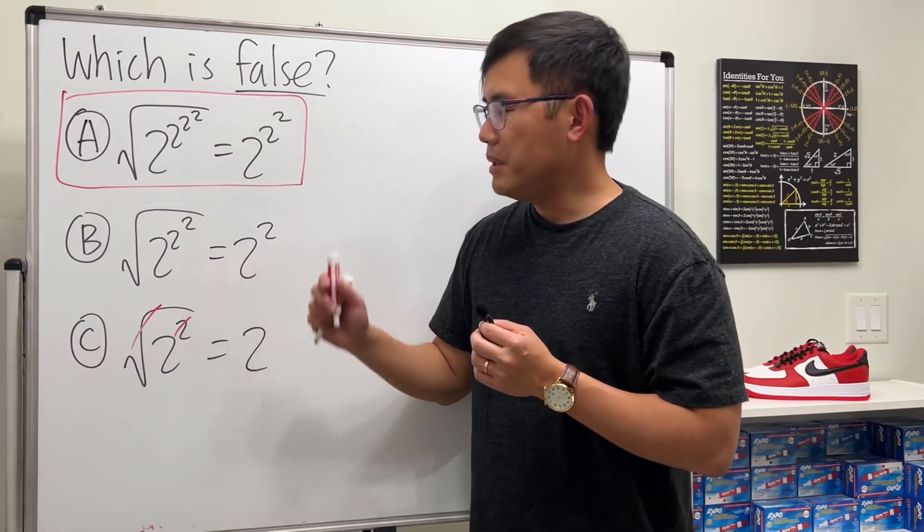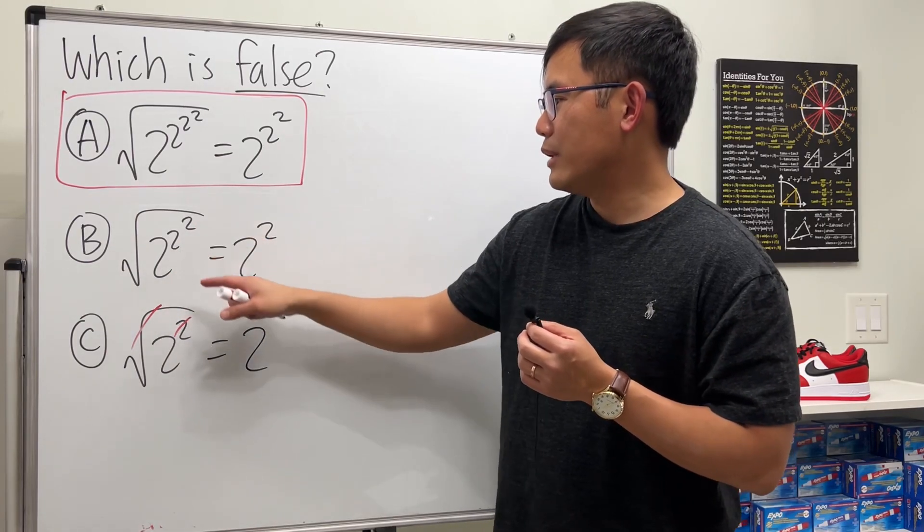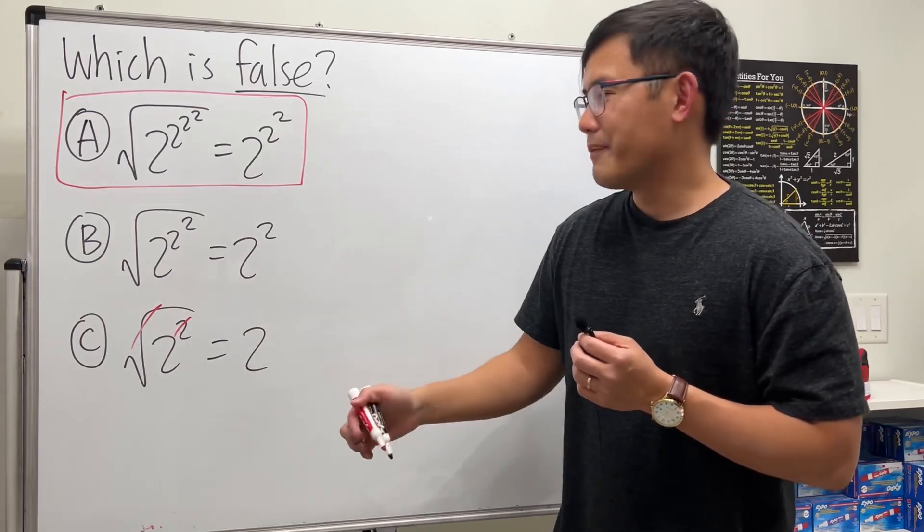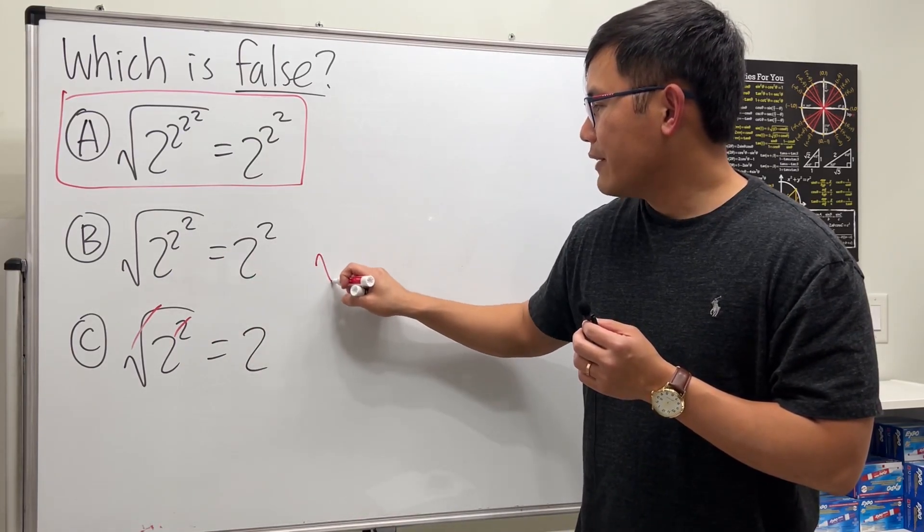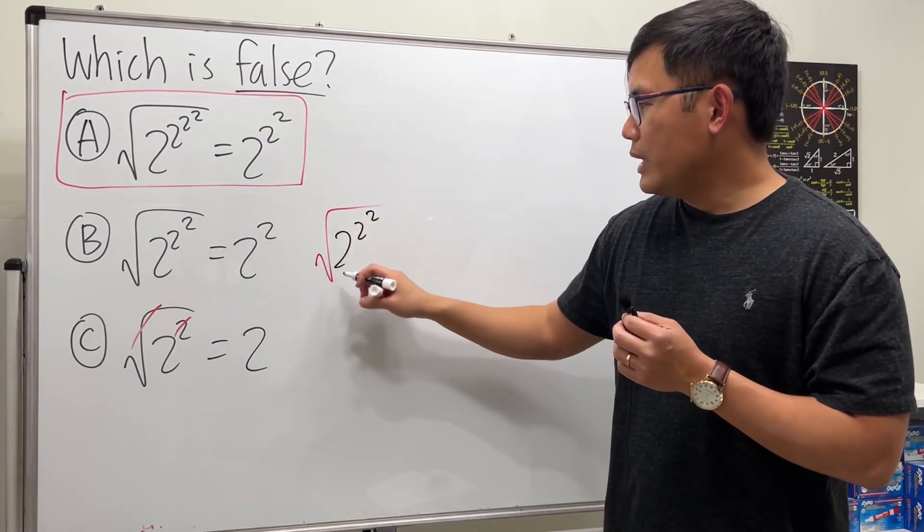Now why is B true? Well, it's kind of cute because we have 2^(2^2), and when we take the square root we only have two 2s. Here's the deal: when we have this notation, it means we take this as the power first. When we take the square root, this is the same as the 1/2 power.